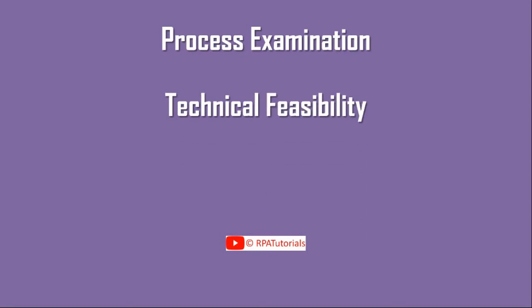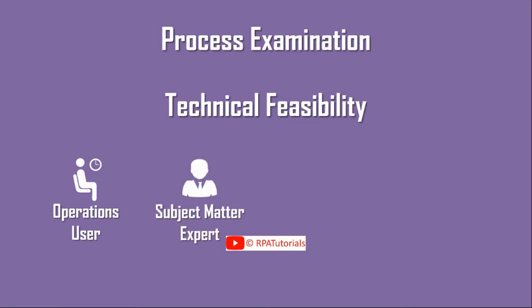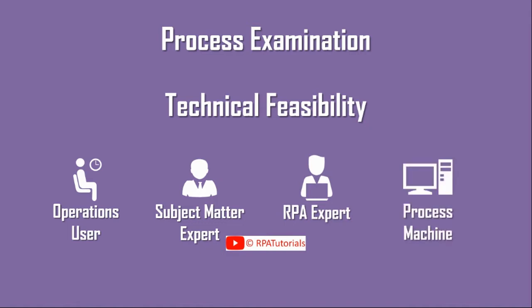To start this stage you would need: an operations user, who is an employee involved in carrying out the process; a subject matter expert, who is an expert in the domain to which the process belongs — for example, if the process is to post incoming invoices into an SAP system, you would need a procure-to-pay expert; and an automation expert, who is an expert in the tool which will be used for automating the process.